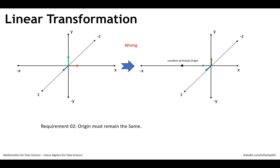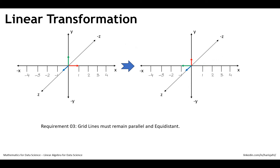Requirement number three is that grid lines must remain parallel and equidistant. The grid lines cannot intersect with each other at any point, and they must be equidistant — for example, the distance between 1 and 2, and between 2 and 3, should always be constant. The transformation we did was correct. However, if you change the distance between the grids so it is not the same, then requirement number three will not comply and that transformation will not be a linear transformation.